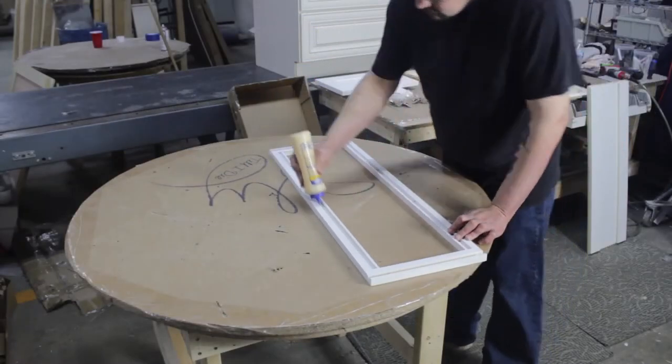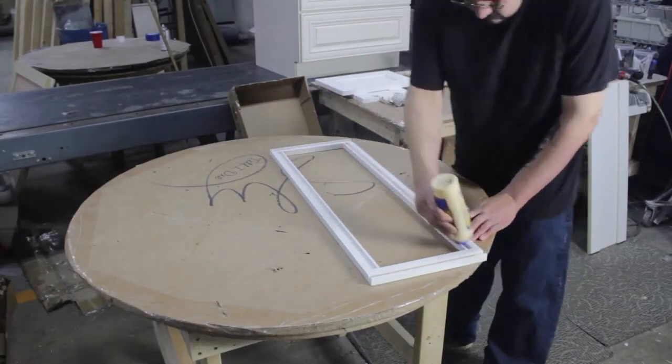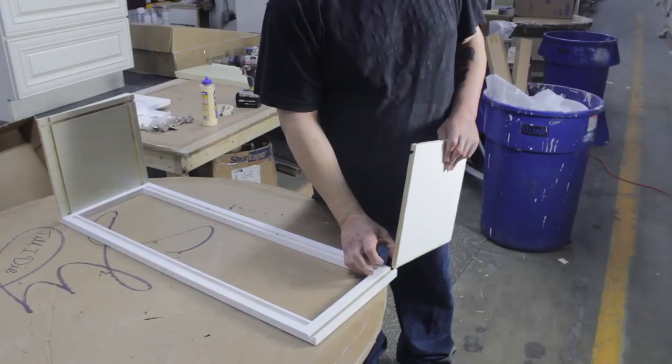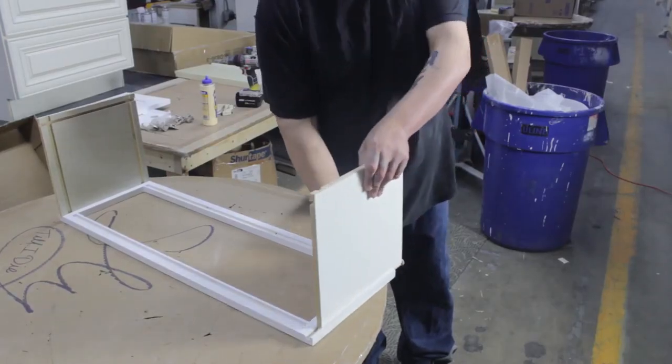Start out with the face frame down and apply a bead of glue into the dovetail groove. Slide the left and right cabinet walls into the vertical grooves. Don't forget to wipe any excess glue.